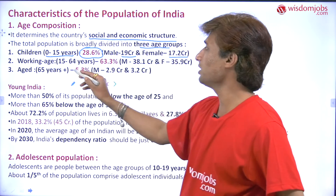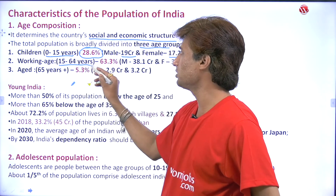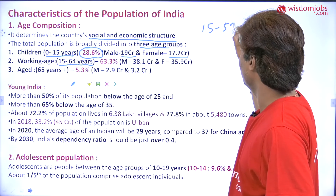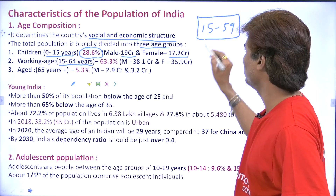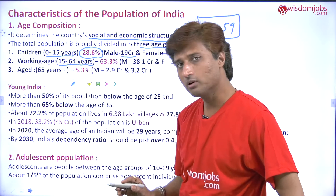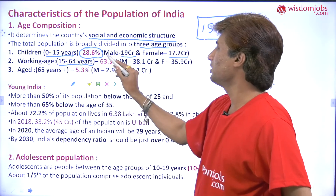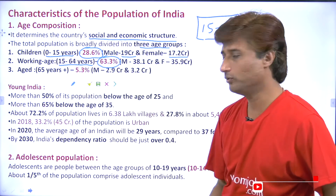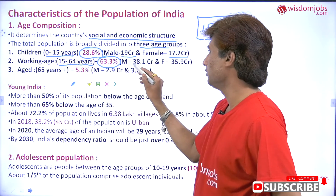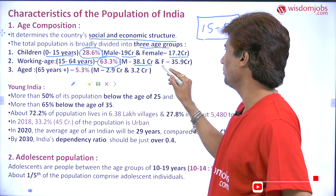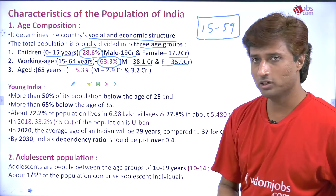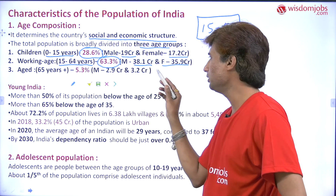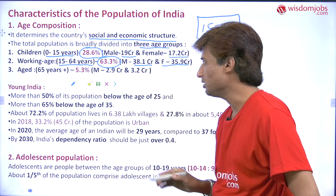The working age group is 15 to 64 years — actually 15 to 59, but the figure of 64 years has been taken here. It is near about 63.3% of the total population, of which males are 38.1 crore and females are 35.9 crore. You might notice there is about a 3-crore difference in females compared to males.